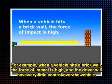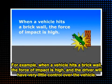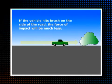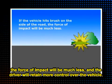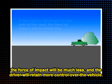For example, when a vehicle hits a brick wall, the force of impact is high, and the driver will have very little control over the vehicle. On the other hand, if the vehicle hits brush on the side of the road, the force of impact will be much less, and the driver will retain more control over the vehicle.